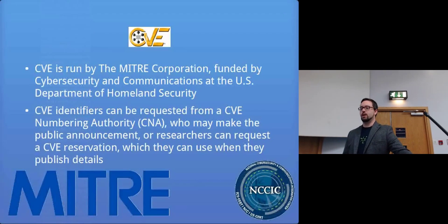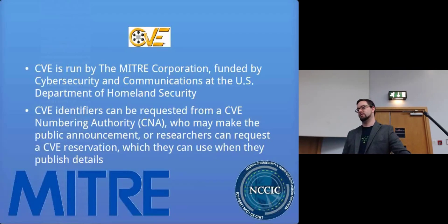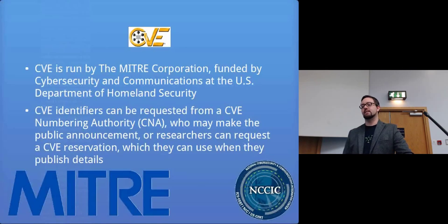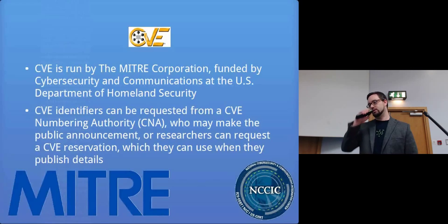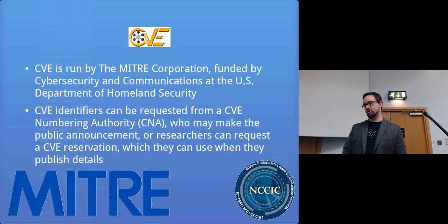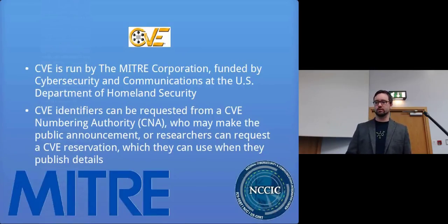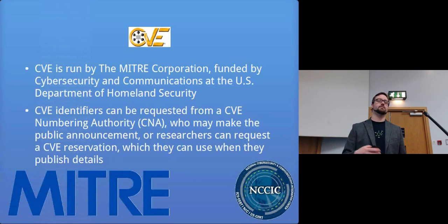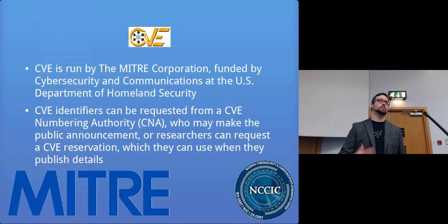CVE is actually managed by MITRE, which is funded by the US Department of Homeland Security. If you need a CVE number — say you find a new vulnerability — you can actually register one by requesting it from a CVE Numbering Authority. Some will publicly announce it, but you can also contact MITRE directly and ask them not to publish the information because you're not ready for it to go public. That comes back to the responsible disclosure concept.